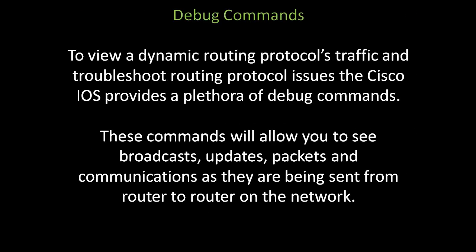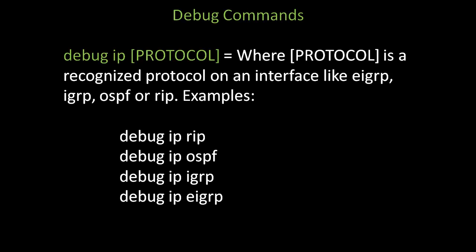Debug commands. To view a dynamic routing protocol as traffic and troubleshoot routing protocol issues, the Cisco IOS provides a plethora of debug commands. These commands allow you to see broadcasts, updates, packets, and communications as they are being sent from router to router on the network. One example is debug ip protocol, where protocol is a recognized protocol on an interface like EIGRP, IGRP, OSPF, or RIP — such as debug ip rip, debug ip ospf, debug ip igrp, and debug ip eigrp.